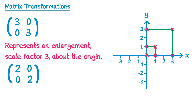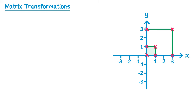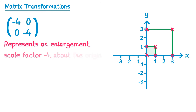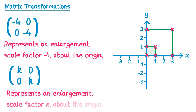If the matrix was [2 0; 0 2], this would be exactly the same, only the square would get 2 times bigger — so this represents an enlargement, scale factor 2, about the origin. We can even do this with negative numbers, so a matrix with negative 4 on the diagonals represents an enlargement, scale factor negative 4, about the origin. In general, a matrix with k on the diagonals and zeros elsewhere represents an enlargement, scale factor k, about the origin. That's the first transformation you need to know.